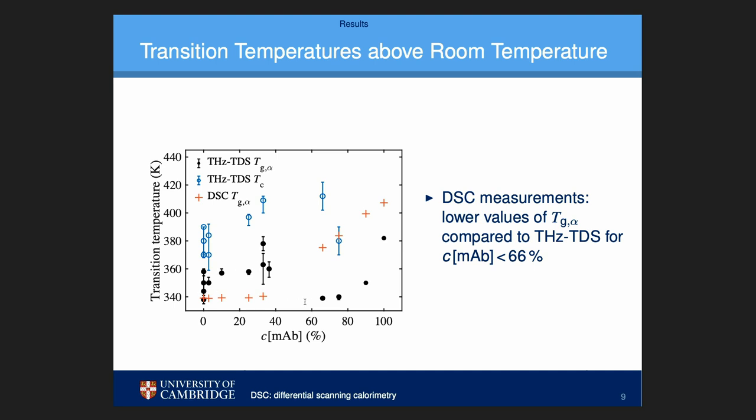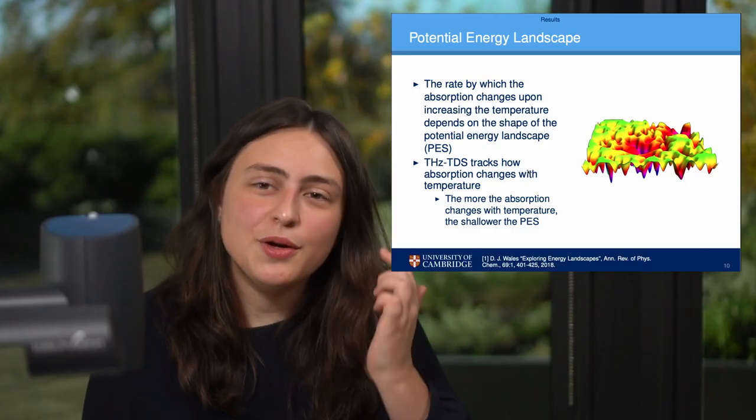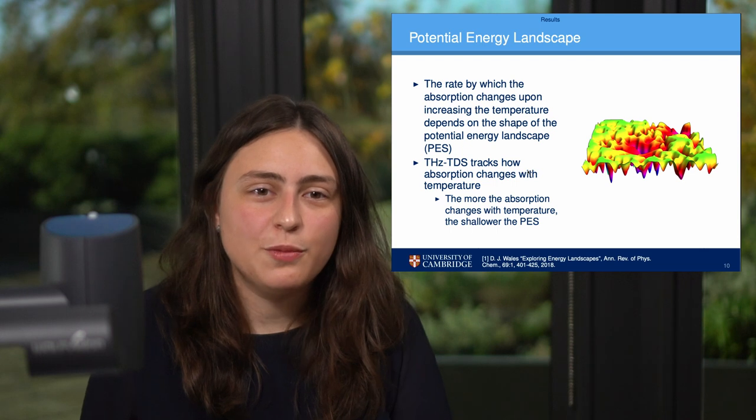Again, above 60% we have that jump, but now the Tg_alpha measured with DSC is actually higher than the one measured with terahertz spectroscopy.